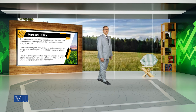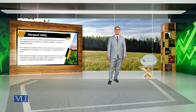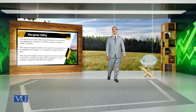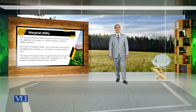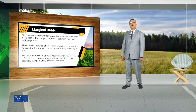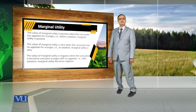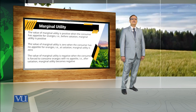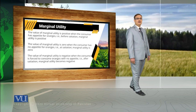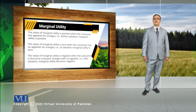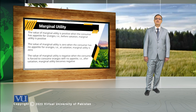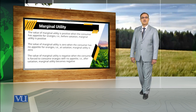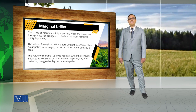Marginal utility is positive as long as the consumer has an appetite for oranges — that is, before the satiation point, the consumer is not fully saturated. This value of marginal utility is 0 when the consumer has no appetite for oranges but is still consuming them, reaching the point of satiation. After passing the satiation point, if the consumer continues using the commodity, marginal utility becomes negative due to forced consumption.